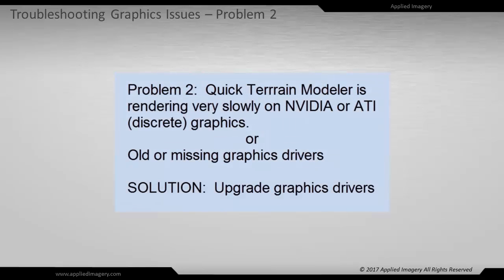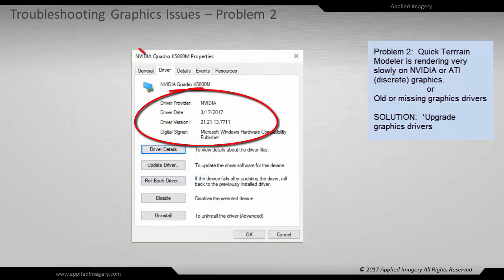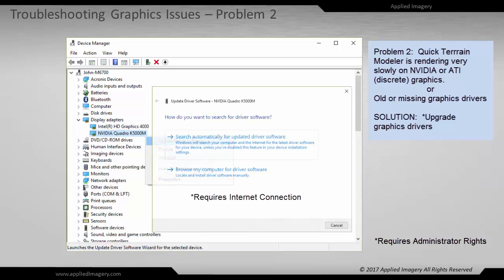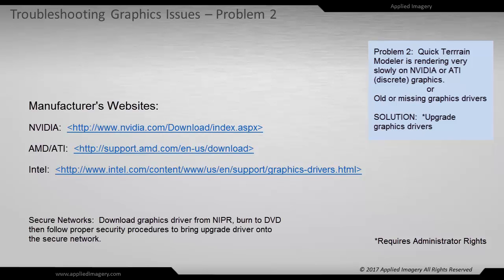The second problem is when QT Modeler is rendering very slowly on your discrete graphics card. The solution is to update the graphics driver. In the Device Manager, under Display Adapters, right-click on the NVIDIA or AMD Graphics Processing Unit and select Properties, then the Drivers tab, to inspect the driver date and version number. If the driver is more than a few months old, attempt to update the driver by selecting the Update Driver button and searching automatically for the driver. This assumes you are connected to the Internet. If this works, your problem should be solved. If no newer driver was found, proceed to the manufacturer's website listed below to download the latest driver and install it using their instructions.